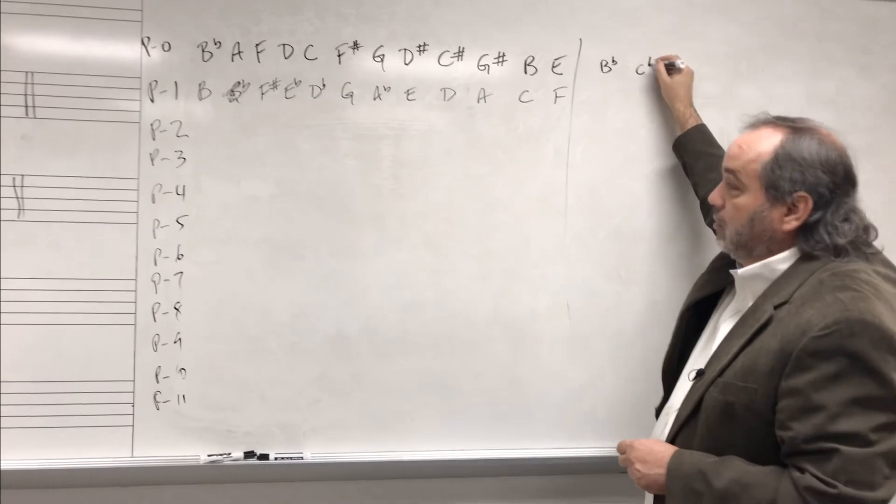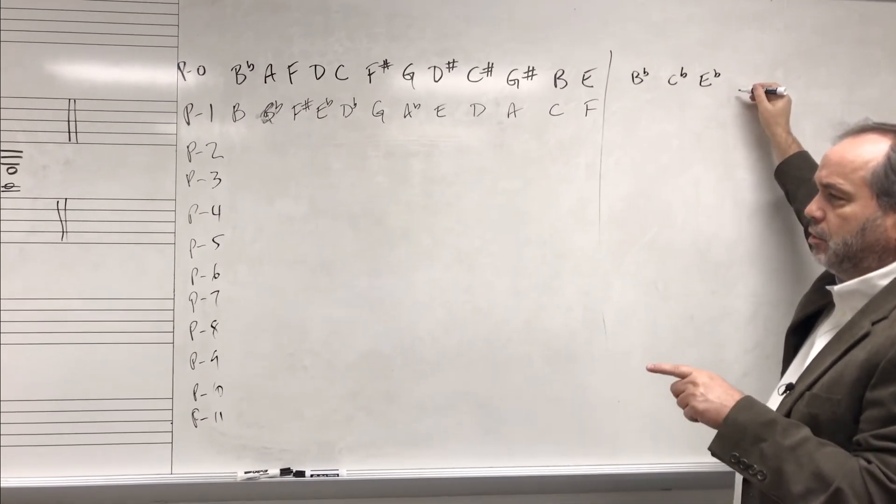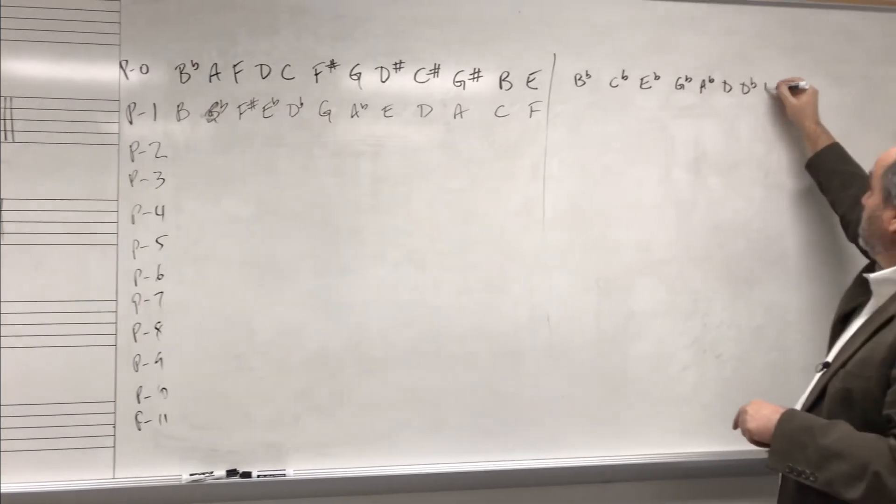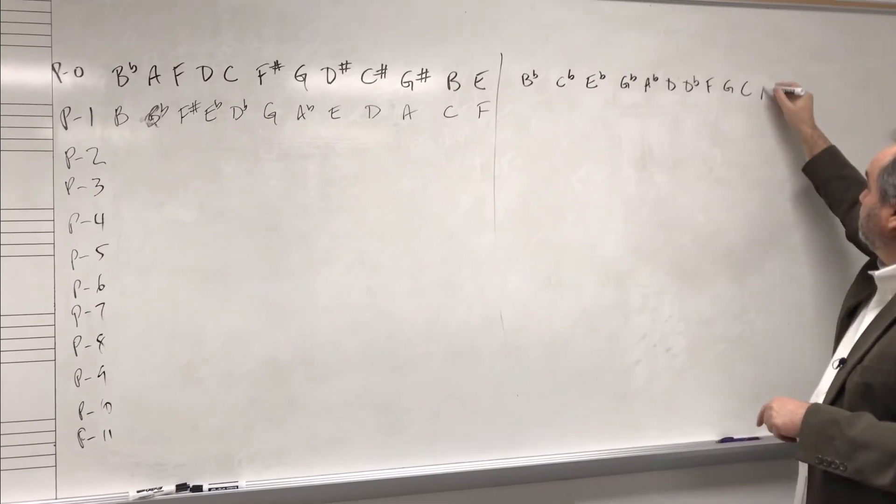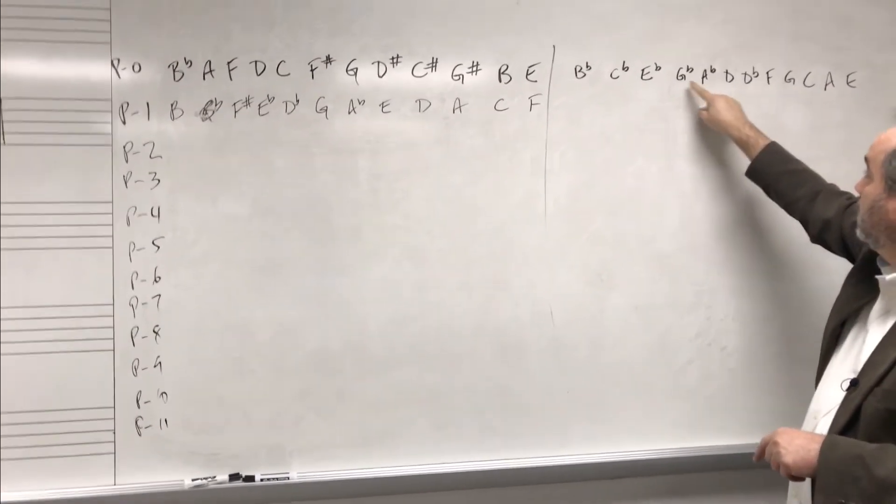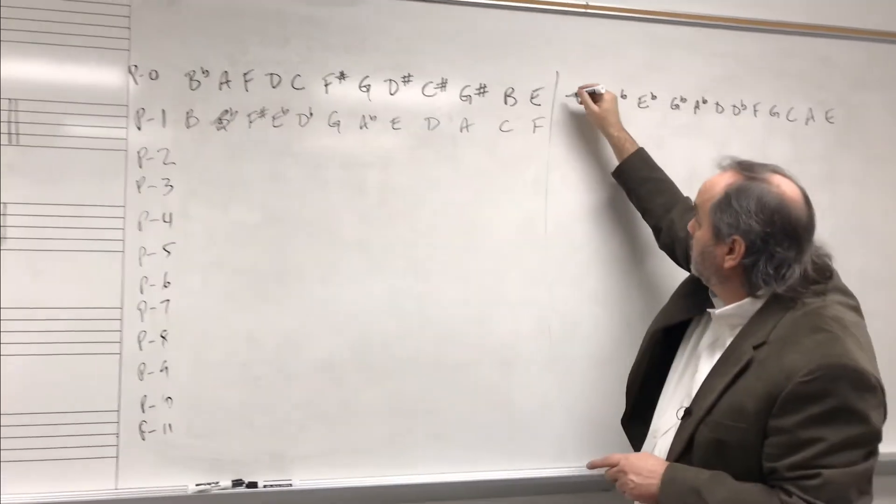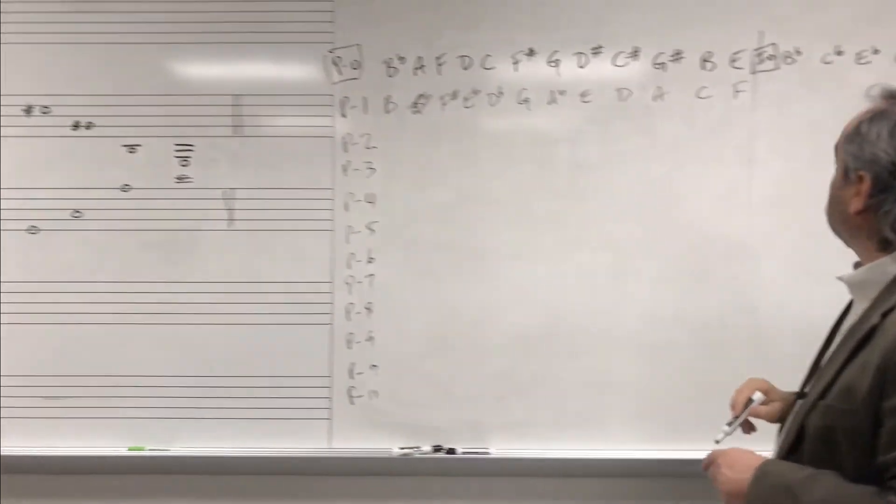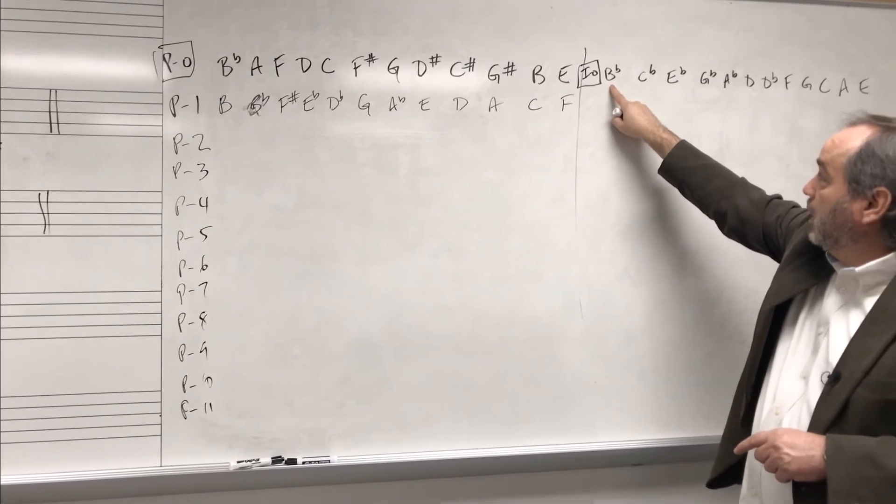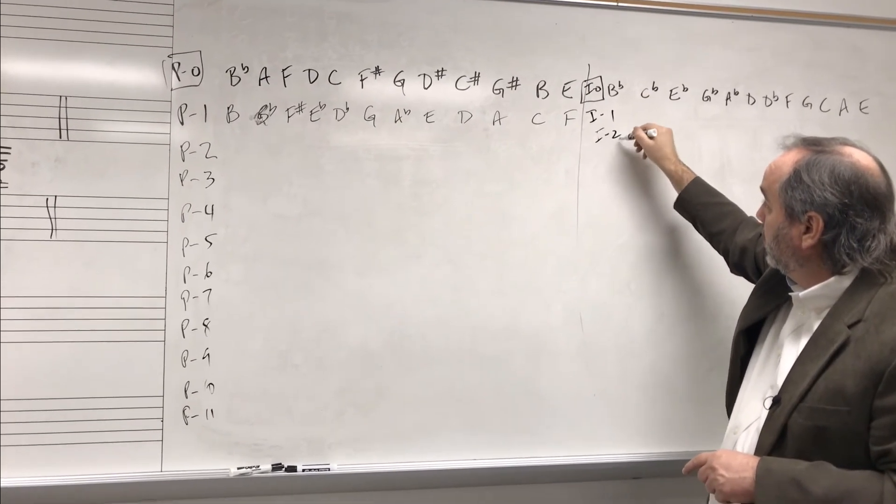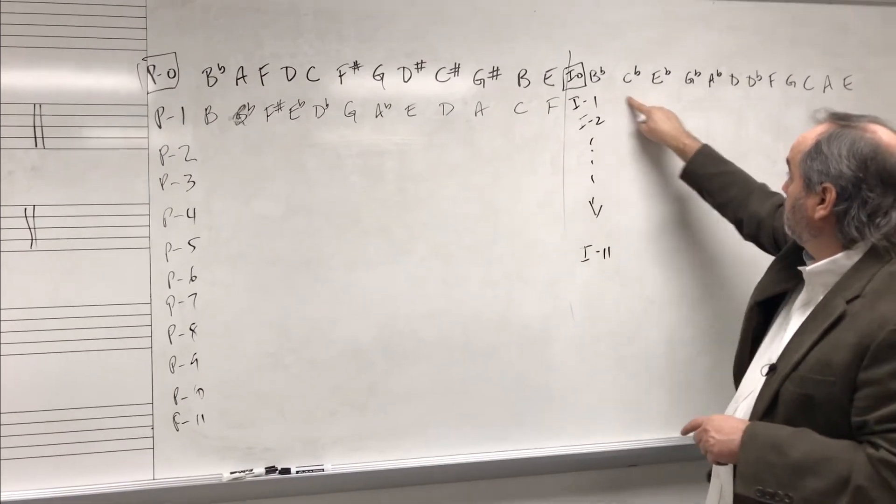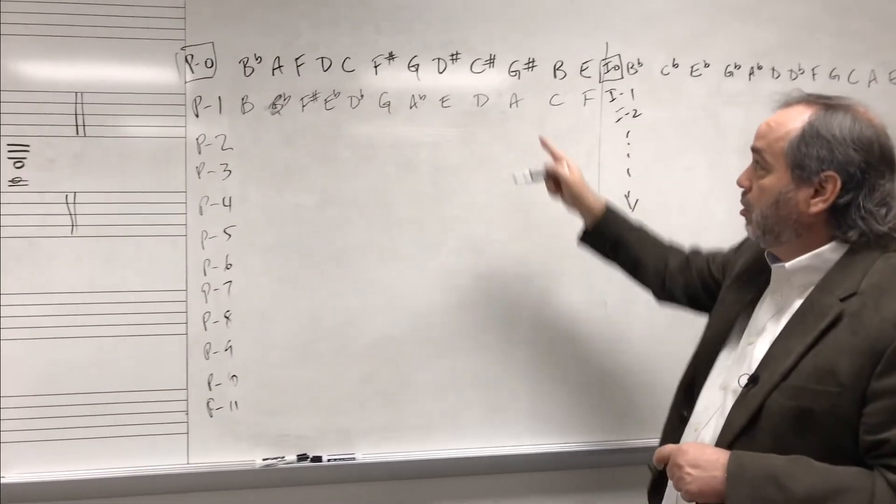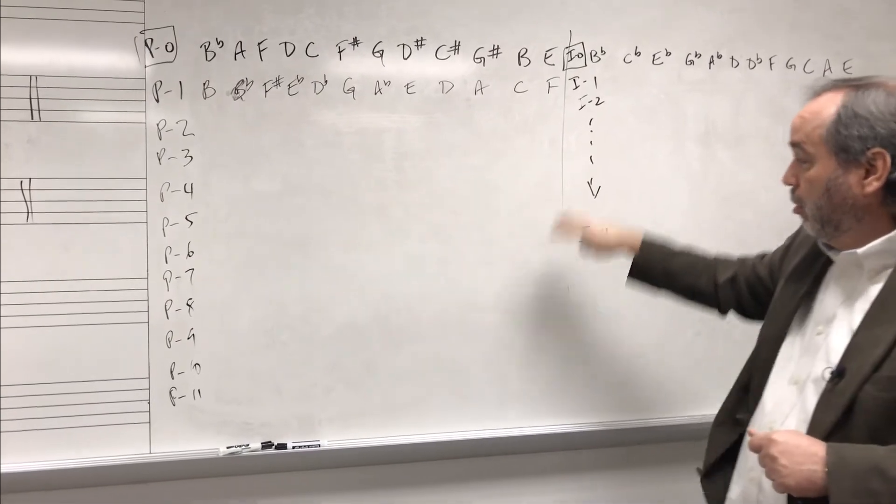And you could take the same thing with the inversion. You could go B-flat, C-flat, E-flat, G-flat, A-flat, D, D-flat, F, G, C, A, E. That should have 12 notes. And I could transpose this. This is called I zero, because it is the inversion starting on the same note, untransposed. But I could also have I one, I two, et cetera, all the way down to I 11. I could transpose this up a half step, up two half steps, up three half steps, and so on. So that gives me the prime form of the row and the inversion of the row with all of the transpositions of each. Composers would use those to make melodic material in their compositions.